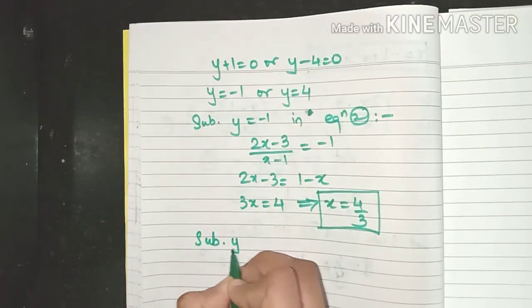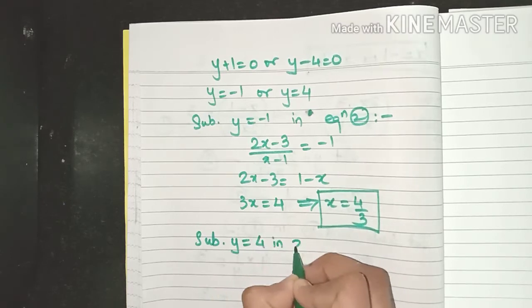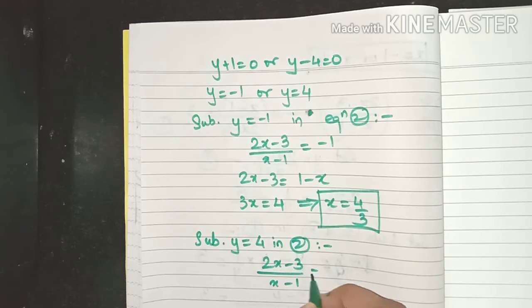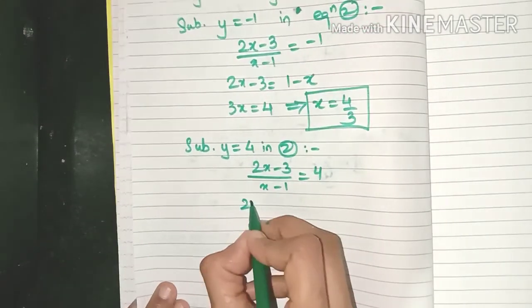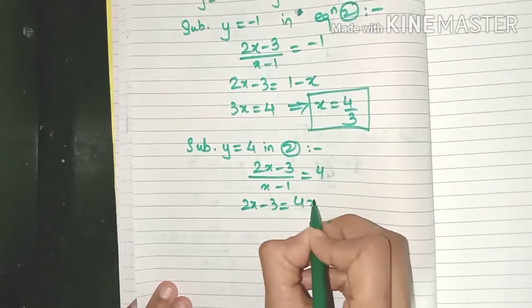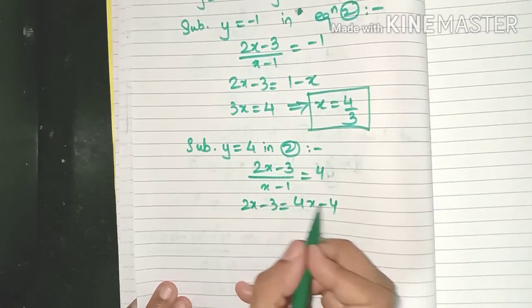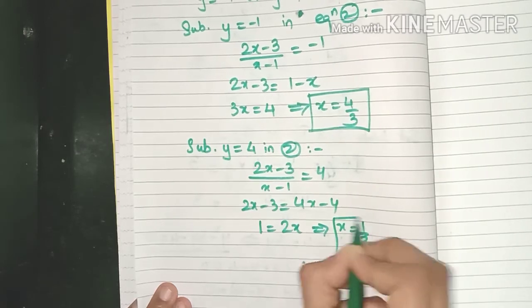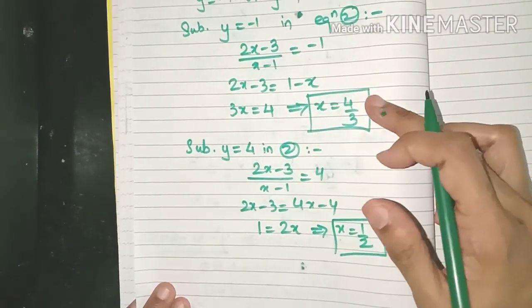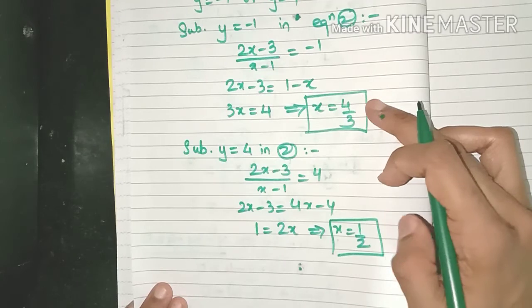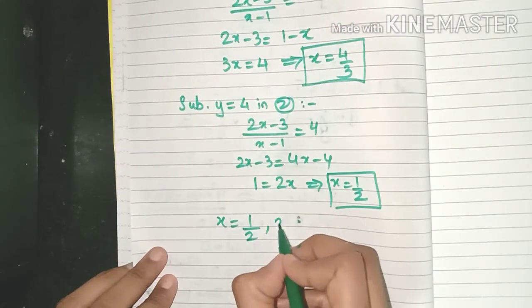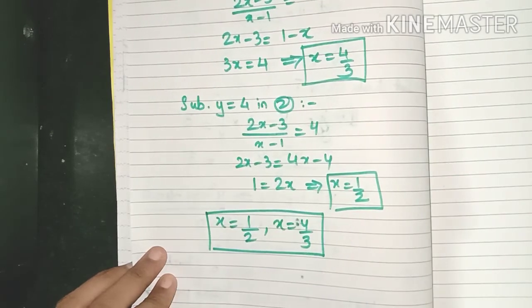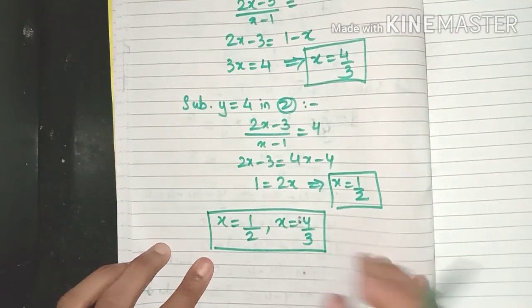Now let's substitute the next value of y which is 4. So we will get (2x - 3)/(x - 1) is equal to 4, which is this. So let me bring here 2x so we will get x as 1/2. These are the two values of x which we get for the given equation. So you just write it finally in a box. This is the final answer.